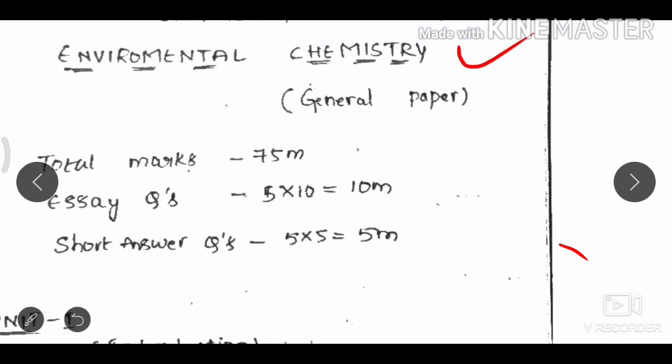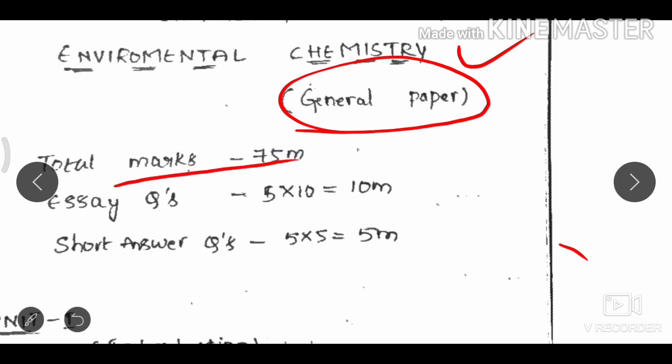Environmental Chemistry is a General Paper — not a cluster paper. It is a common paper for all degree students in the final semester, which is the 6th semester.